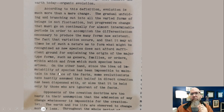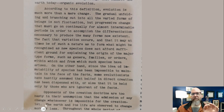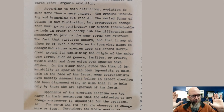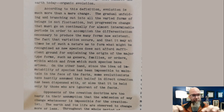Continuing: 'Some evolutionists have hastily assumed that belief in direct creation has been dispensed with, or else that it has been held only by those who are ignorant of the facts. Opponents of the creation doctrine are too hasty in their assumption that the admission of any change whatsoever is impossible for the creationist.' He's saying: no, no — we say yes, change can happen, Darwin was right, variation happens, speciation can happen, but we don't think you can make groups of species with differences we recognize as genera. I'm not even sure what Clark really thinks about that exactly — you're going to see some changing of his language even within two pages of text.